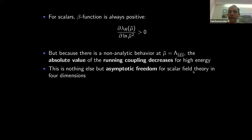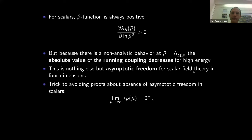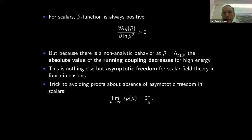The beta function is always positive, yet because of this non-analytic behavior the running coupling decreases at high energy, approaching zero from below. This means the theory becomes asymptotically free at high energies — in a scalar field theory — which directly contradicts the Coleman-Gross proof. The loophole is the same: the coupling approaches zero from below, which was explicitly dismissed in the Coleman-Gross proof by assuming the coupling must be positive.